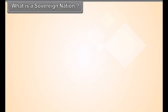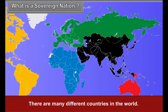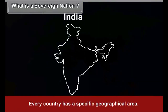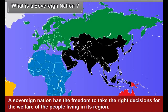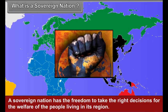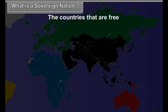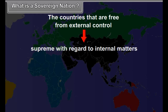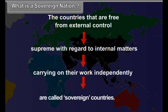What is a sovereign nation? There are many different countries in the world. Every country has a specific geographical area, and the people living in that country are its citizens. A sovereign nation has the freedom to take the right decisions for the welfare of the people living in its region. The countries that are free from external control and supreme with regard to internal matters, carrying on their work independently, are called sovereign countries. In this sense, India is a sovereign nation.